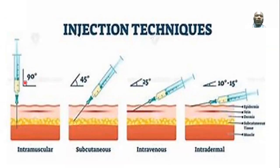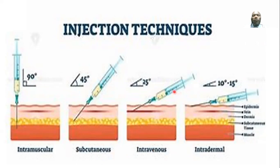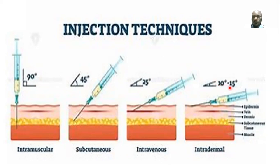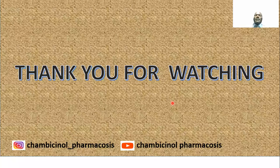For the parenteral route, there are specific needle angles: for intramuscular, the needle is placed at a 90-degree angle; for subcutaneous, 45 degrees; for intravenous, the syringe should be at 25 degrees; and for intradermal, the needle angle ranges from 10 to 15 degrees. These are the different techniques used when administering drugs parenterally. This is all about the introduction to pharmacology.